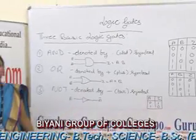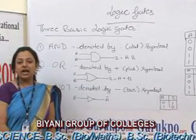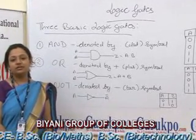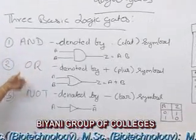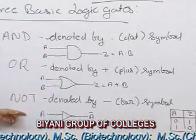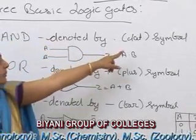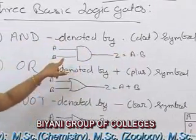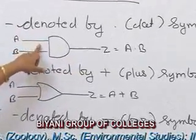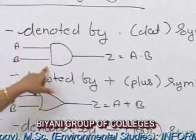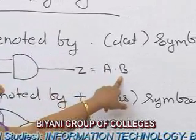The computer circuits are designed with the use of different logic gates. As we know there are three basic logic gates: first AND gate, second OR gate, and third one is NOT gate. In AND gate it is denoted by dot symbol. We enter A and B, and we get the output in the form of A dot B.